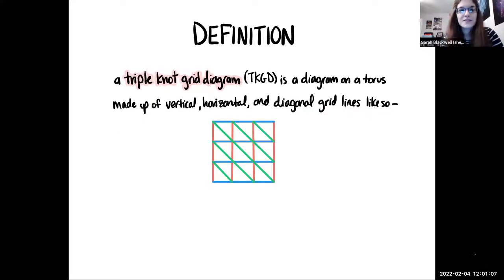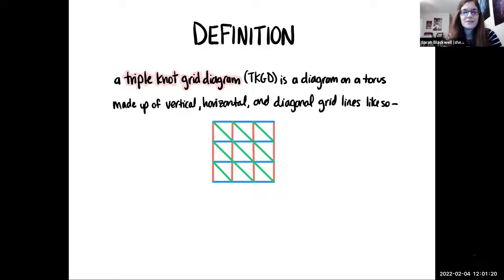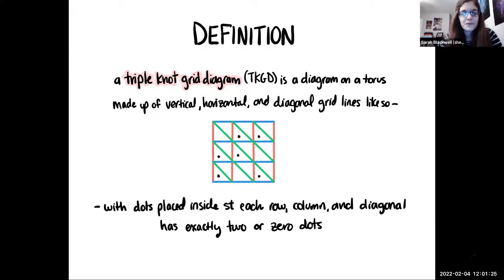Let's go right into a definition. What is this thing? A triple knot grid diagram, which I will abbreviate TKGD, is a diagram on a torus made up of vertical, horizontal, and diagonal grid lines. I want an equal number of vertical, horizontal, and diagonal grid lines, with dots placed inside such that each row, column, and diagonal has exactly two or zero dots.